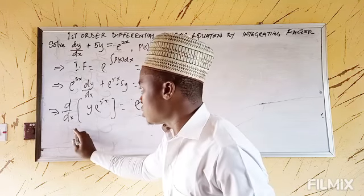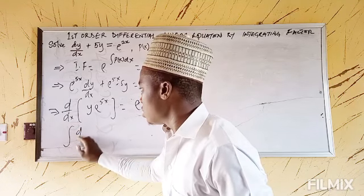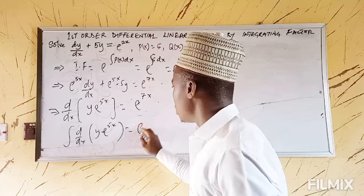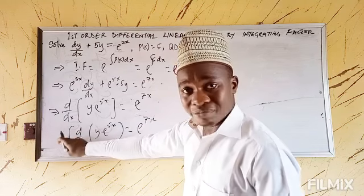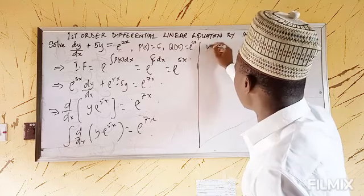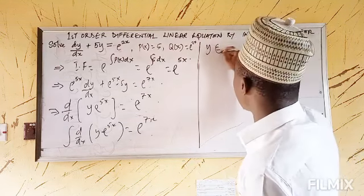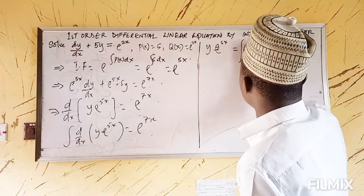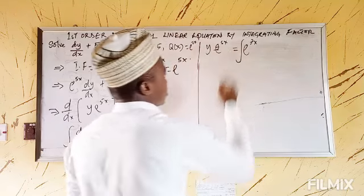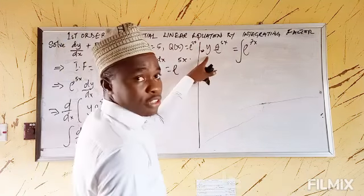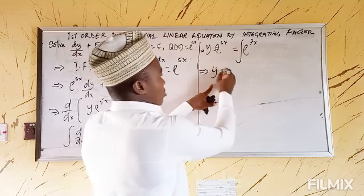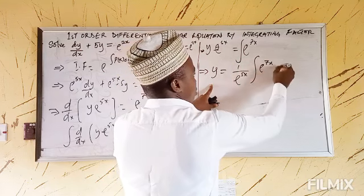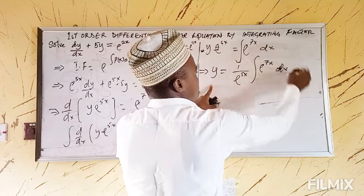Since we've written this in condensed differential coefficient form, we now try to integrate both sides. Integrating: ∫d/dx[y·e^(5x)]dx equals ∫e^(7x)dx. The integral sign neutralizes the d/dx, so we are left with y·e^(5x) equals ∫e^(7x)dx.